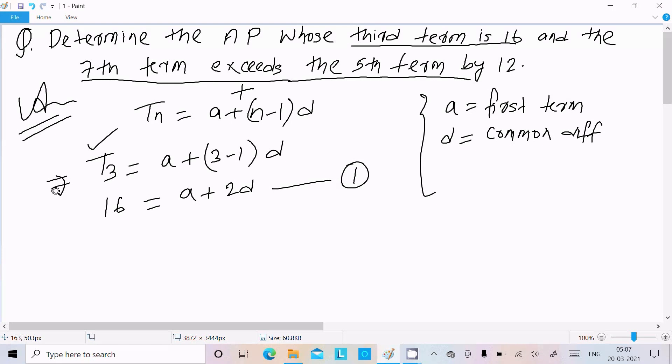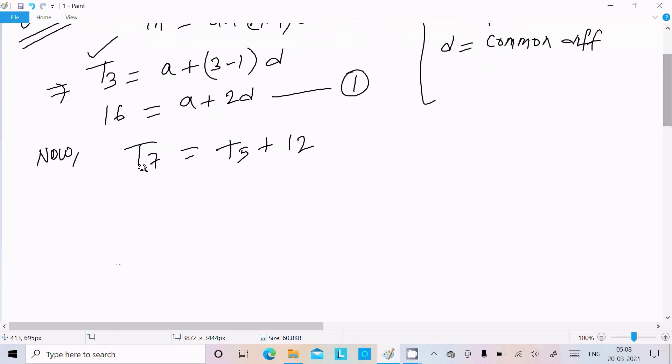Now for the T7 term, since T7 exceeds T5, you need to use plus. So T7 exceeds T5 by 12. Now T7 we can write as a plus 7 minus 1 into d, and T5 as a plus 5 minus 1 into d, plus 12.